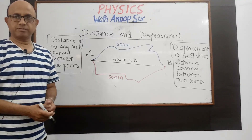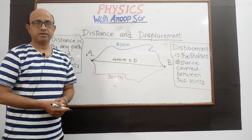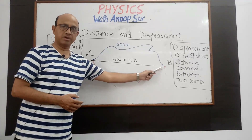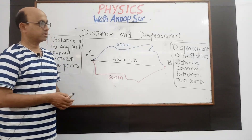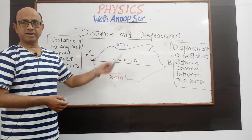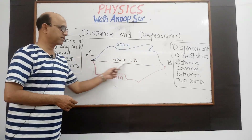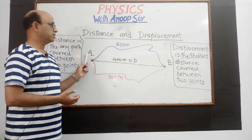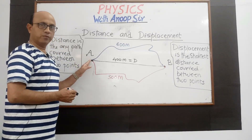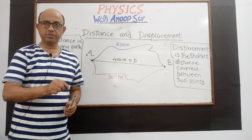Now we take another example. This is point A and point B, the distance between them is 400 meters. We also have another path marked in red color of 500 meters length, and a third track in blue color of 600 meters — so you can move from A to B via three different ways. The shortest distance covered is 400 meters.